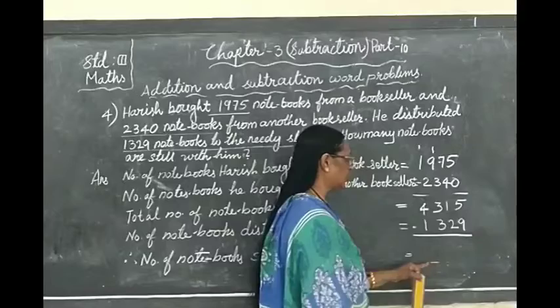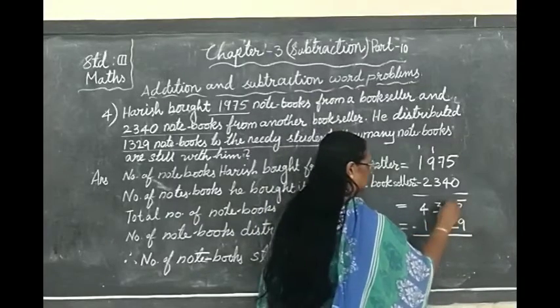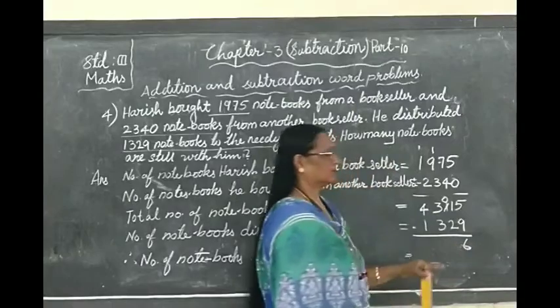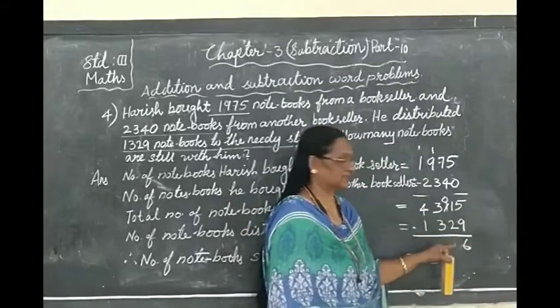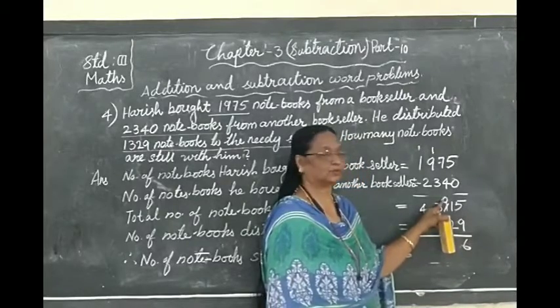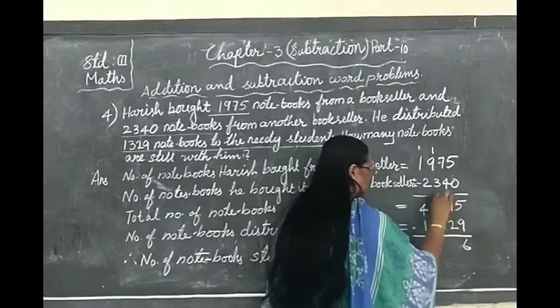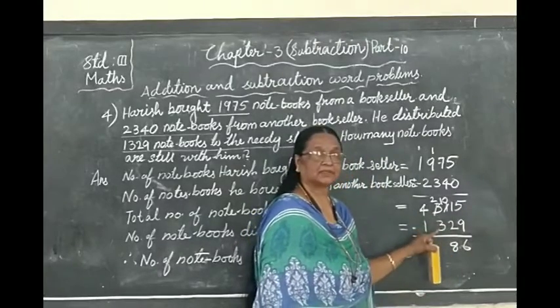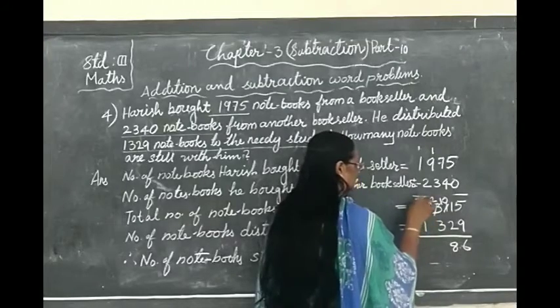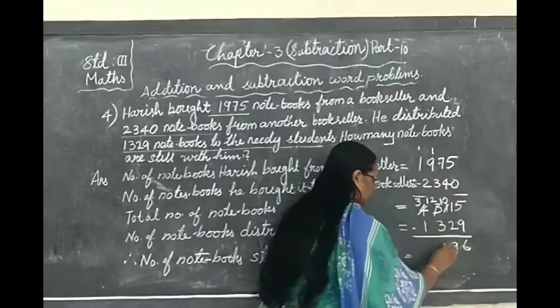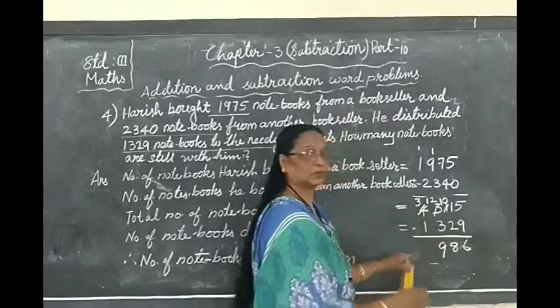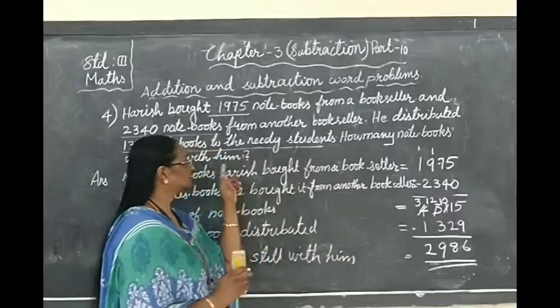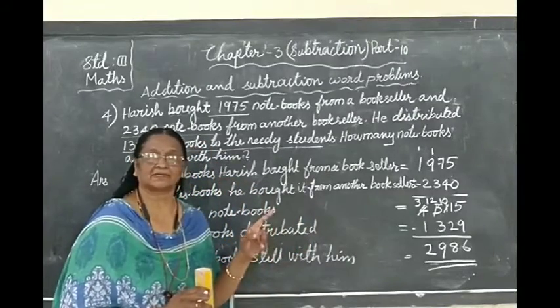5 minus 9? No. 5 is a single number. So what we have to do? We have to borrow from tens place. So we borrow 1 from tens place. Now 15 minus 9 is 6. Now are we able to subtract 2 from 0? No. We have to borrow from hundreds place. Now 10 minus 2 is 8. The same way here, we cannot subtract 3 from 2. We have to borrow from thousands place. Now 12 minus 3 is 9. 3 minus 1 is 2. Now the answer is, how many notebooks are still with him? There are 2,986 notebooks.